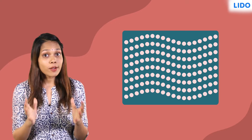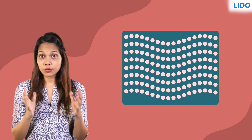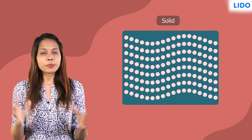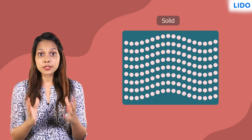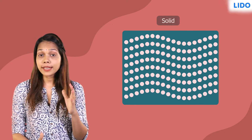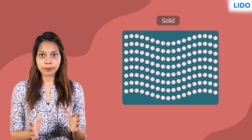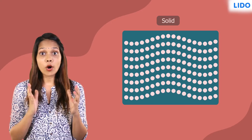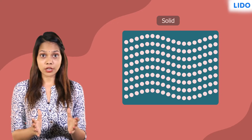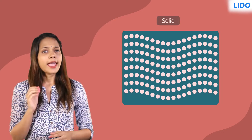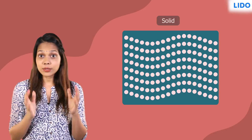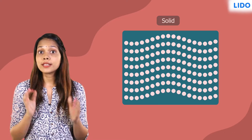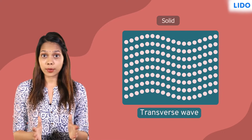When sound travels through a solid, the molecules of the solid vibrate up and down while sound travels in a horizontal direction. Hence, this wave is called a transverse wave.